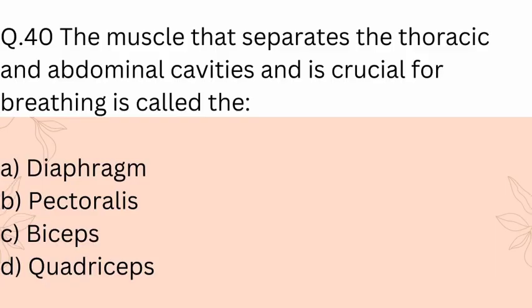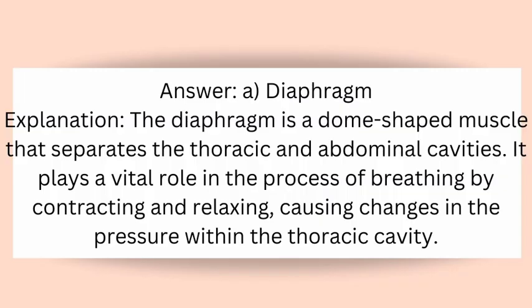Question 40: The muscle that separates the thoracic and abdominal cavities and is crucial for breathing is called? A) Diaphragm, B) Pectoralis, C) Biceps, D) Quadriceps. Answer: A) Diaphragm. Explanation: The diaphragm is a dome-shaped muscle that separates the thoracic and abdominal cavities. It plays a vital role in breathing by contracting and relaxing, causing changes in pressure within the thoracic cavity.